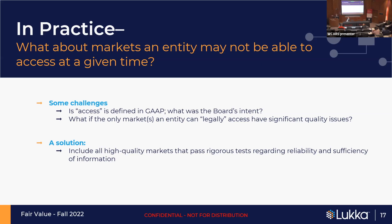What if you don't have access at a particular time — how was access defined in GAAP? Going back into the basis of conclusions and the original exposure drafts from when fair value was first discussed by the board, you see language about looking for reasonable access. The intent was to avoid entities using discretion to simply pick a principal market that suited a particular price at that time. So one solution to the question of access is to look across the board — especially with crypto — at high-quality markets that pass rigorous tests about the reliability and sufficiency of data.